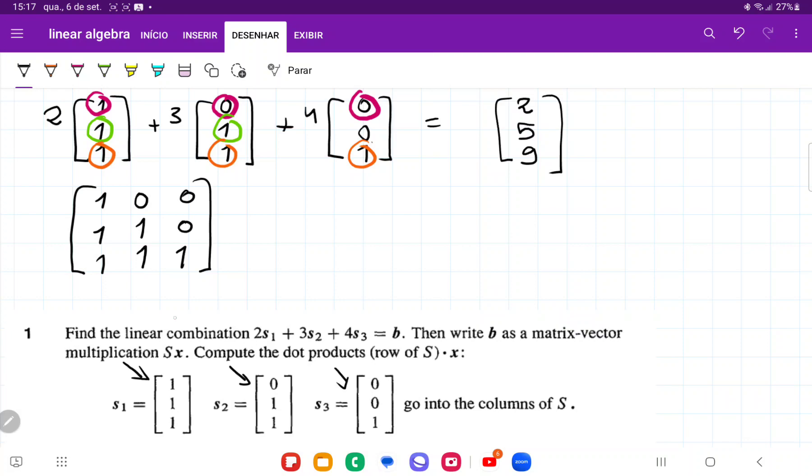It got multiplied by the vector that scaled it, which is (2, 3, 4). That's how we got b. When you multiply this matrix by the vector (2, 3, 4), you should get (2, 5, 9).